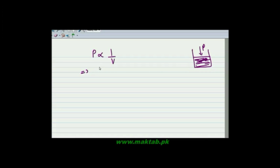We can see that P is equal to K divided by V. This is Boyle's Law. We have an experiment at 25 degrees Celsius, where temperature is constant.